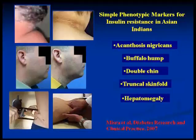Then you can see the truncal skin fold as well as hepatomegaly — the fatty liver that was alluded to earlier.